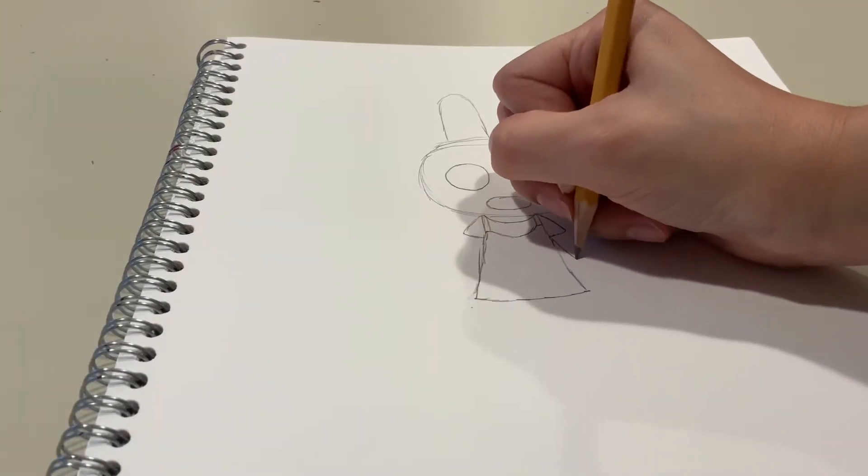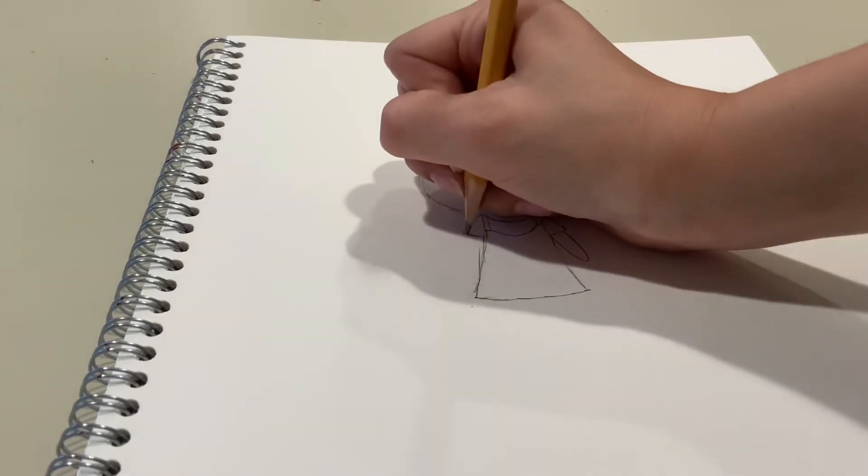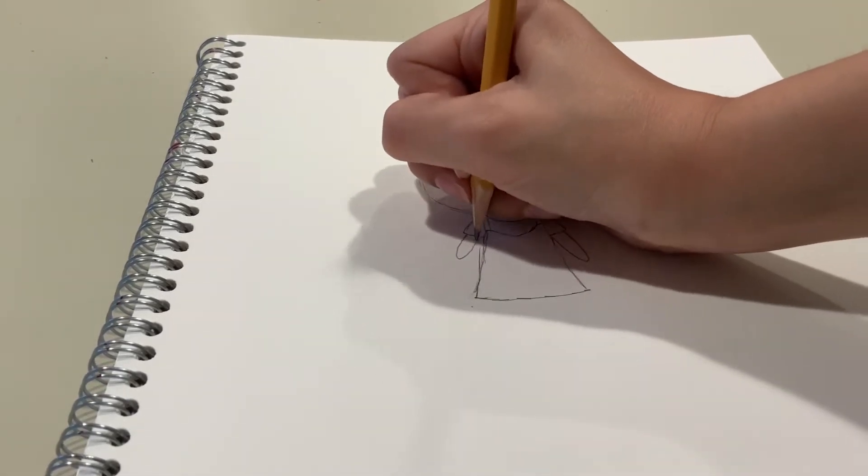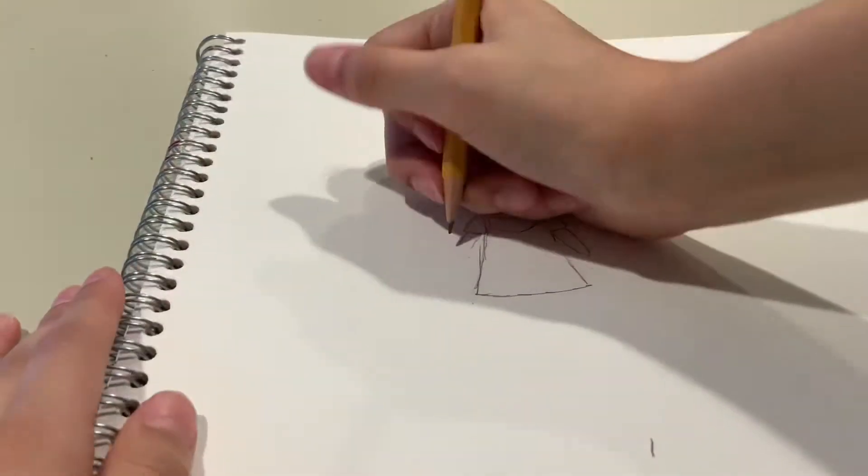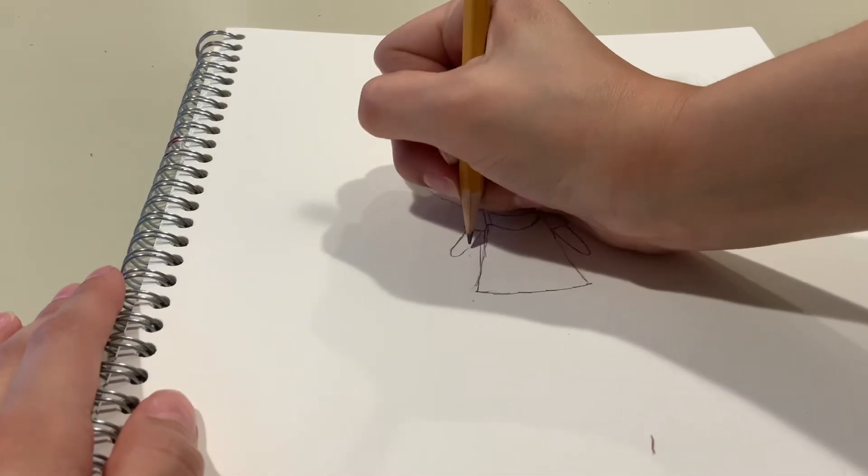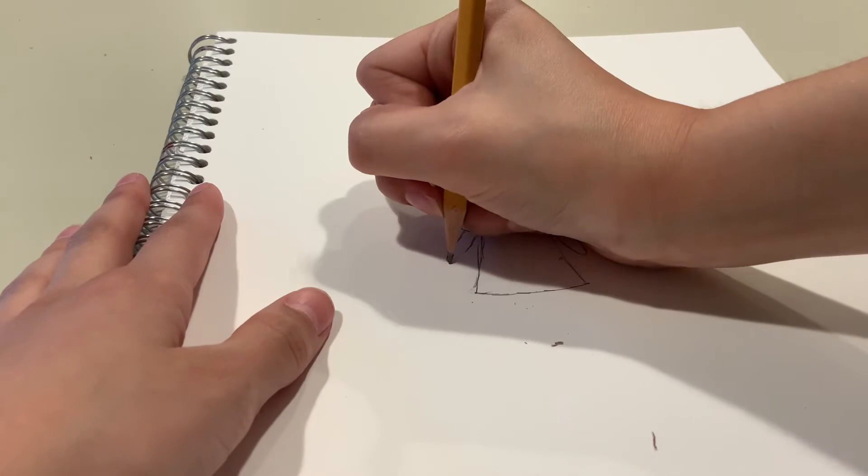So now I've decided that actually I want her arms to be sticking out because it looks more like the Animal Crossing Villager if you have the map. And so here I am having a bit of trouble deciding how long each arm should be. That part was a little bit challenging.